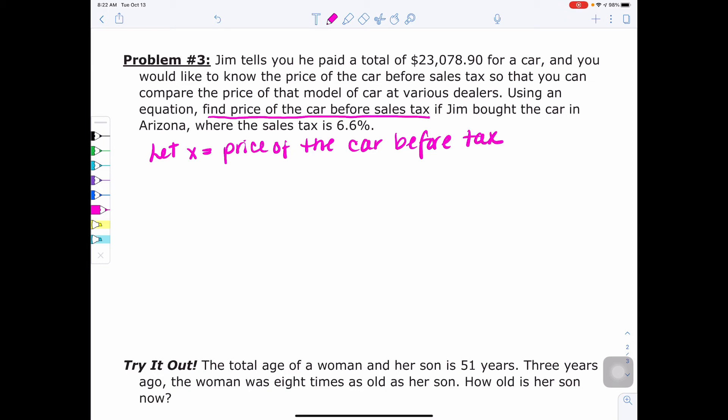Now, if you think about how tax works, you buy something at the store, you go up, they scan the price tag, and then when you go to pay for it, you pay a percentage of that price in addition to the price of the item. So we have the price of the car, which is X. But we also have to, in addition, pay the tax on that car. So 6.6%, we need to change to a decimal. So remember, you move it two to the left, and you get 0.066. So we are going to say 0.066 times the price of the car. Remember, it's a percentage of the price. And that should be a total of $23,078.90.